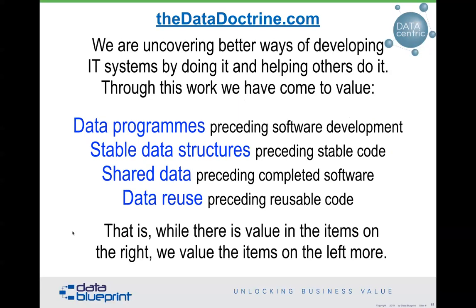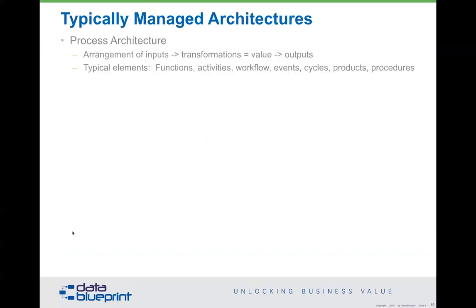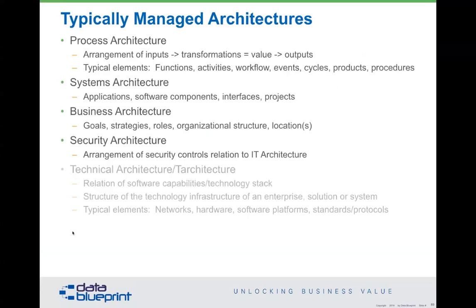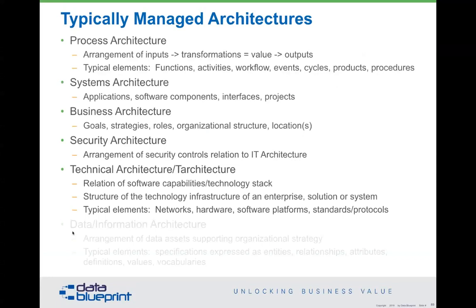If we don't do things like this, we end up having to do rework, scrap, and throwing things away — which is why so many IT projects fail. I've done analysis of well over a hundred major IT failures, and the root cause of each and every one has been a data problem — data model problem — because data programs, data structures, shared data, and data reuse are all covered by data models. Every organization manages different types of architectures to different degrees: process architecture, system architecture, technical architecture, data architecture.